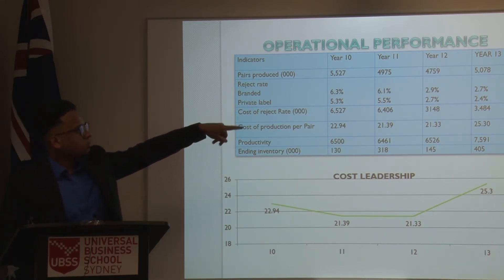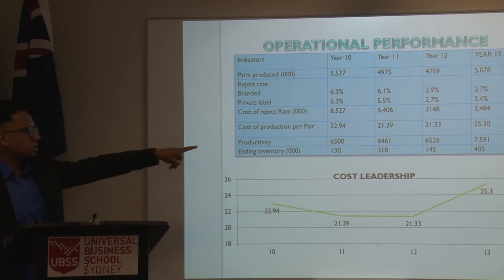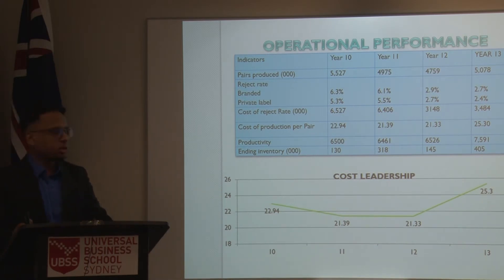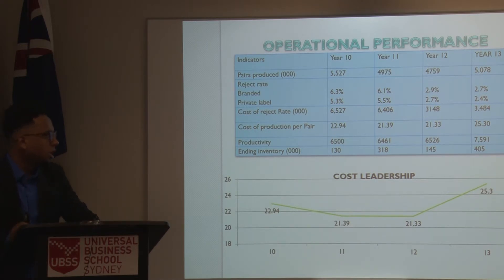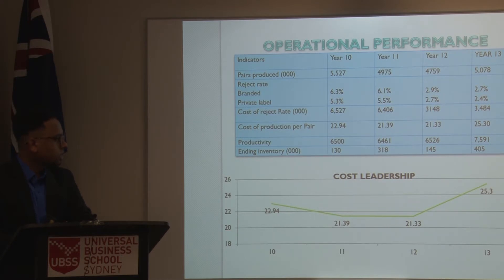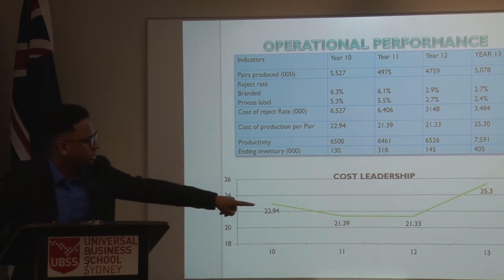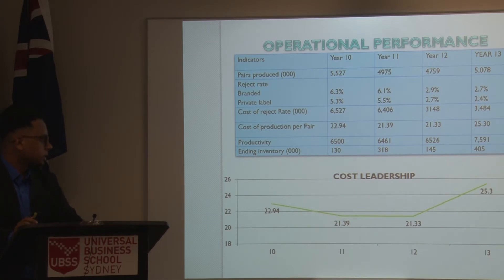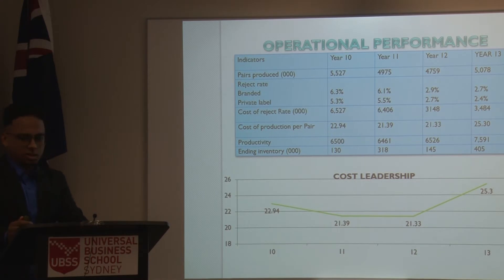In year 13, that's why we produced more shoes — over 5 million. The reason was we didn't have enough inventory to meet the demand, as year 12's inventory had run into BSG. Here on the bottom table, we can see the production cost in year 13 was $25.3 — as I mentioned, because we were producing six-star shoes.